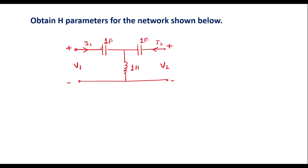In finding H parameters, we can see that we have capacitor and inductor components present in the circuit. For easy simplification, I will represent this circuit in terms of the S domain. In the S domain, a capacitor is represented by 1 over Cs and an inductor L is represented by Ls. In this circuit, the value of the capacitor is 1 Farad, so it will be replaced by 1 over S. The inductor value is also 1, so it can be replaced by S.